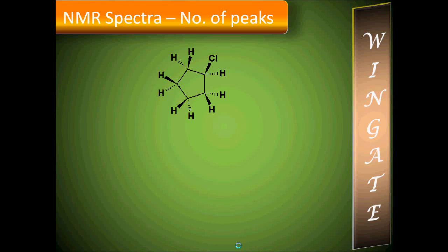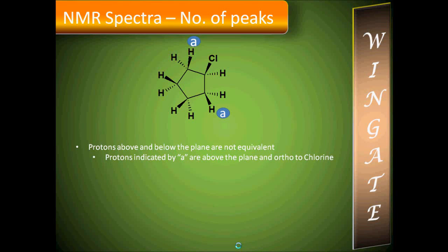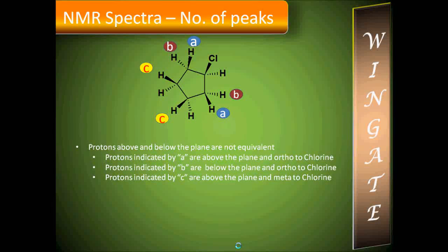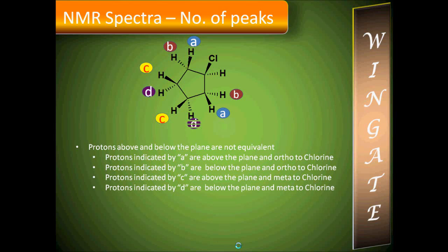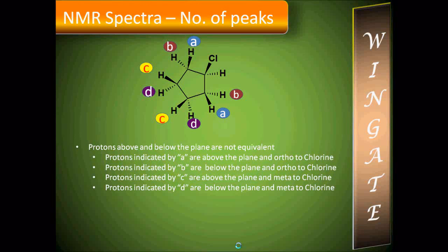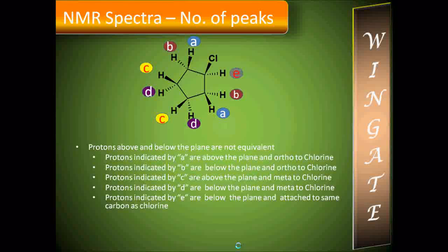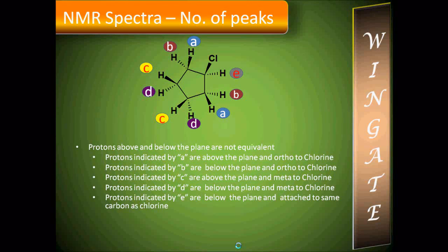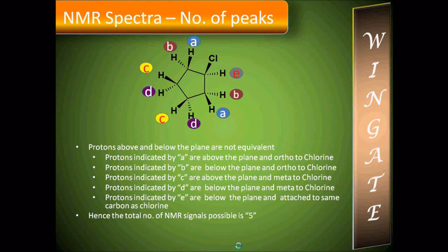Now let us take a cyclic compound: 1-chlorocyclopentane. The protons above and below the plane are not equivalent. Protons indicated by A are above the plane and alpha to chlorine; protons indicated by B are below the plane and alpha to chlorine. Protons indicated by C are above the plane and meta to chlorine; protons indicated by D are below the plane and meta to chlorine. Finally, the proton indicated by E is adjacent to chlorine on the same carbon as chlorine. The total number of NMR signals possible is 5.